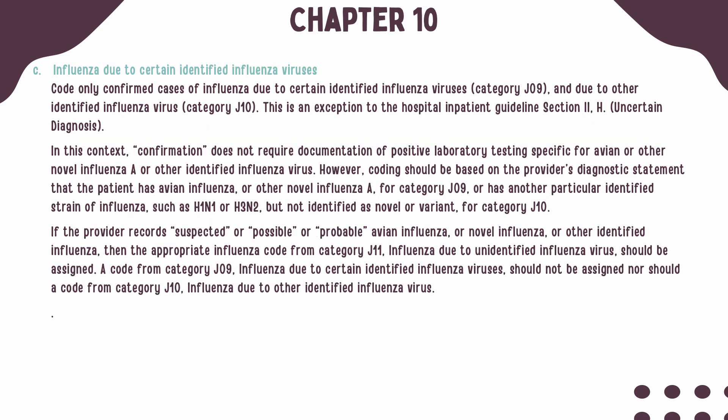When coding for influenza, confirmation does not require documentation of a positive lab test, and it can be coded based on the provider's diagnostic statement that the patient has the specific type of influenza. If the provider documents suspected, possible, or probable specified influenza, then the appropriate code from Category J11 for influenza due to unidentified influenza virus should be assigned. It is important to note that a code from J09 and J10 should not be assigned together under any circumstances.